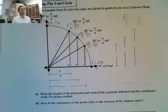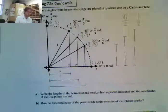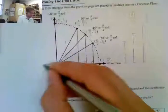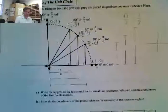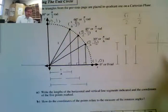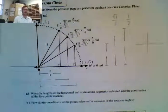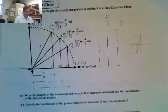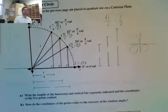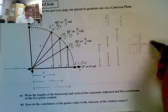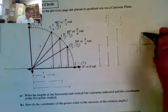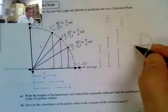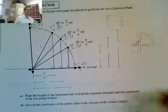Once we know the reference angles in the first quadrant, we can apply them to all other quadrants. In quadrant 2, all x's are negative and y's are positive. In quadrant 3, all x's and y's are negative. In quadrant 4, y's are negative and x's are positive. In quadrant 1, everything is positive. So as long as I know the first quadrant, I can apply these to all quadrants based on reference angles.